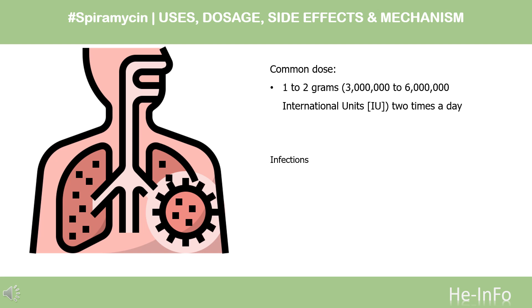For injection dosage form, for treatment of infections: Adults and teenagers, 500 milligrams (1,500,000 IU), injected slowly into a vein every 8 hours.